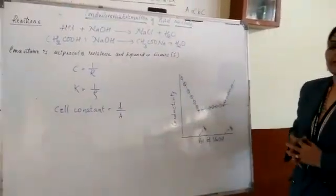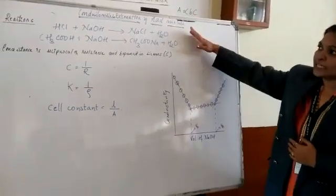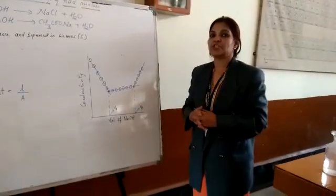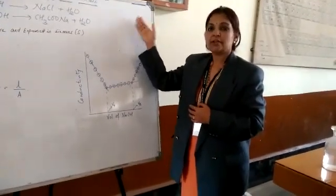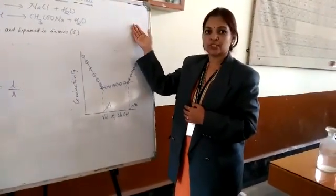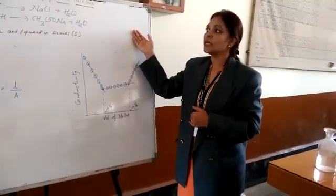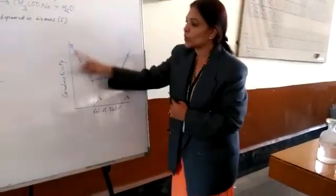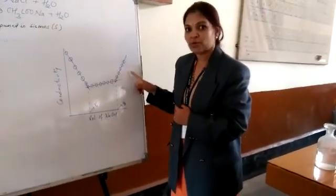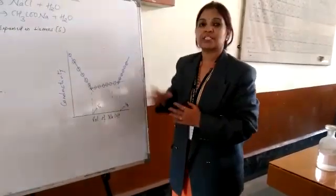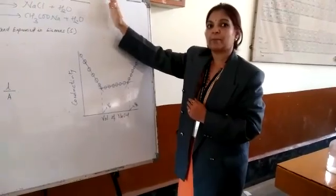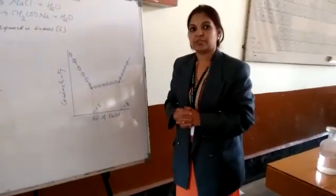This is what conductometric estimation is. It is somewhat different from volumetric estimation. In volumetric estimation, indicators are used, and it is very difficult to perform for turbid or colored solutions. In conductometric estimation, the equivalence point is determined from the graph, making the calculation of acid strength more accurate compared to volumetric estimation. Thank you.